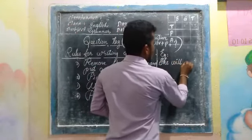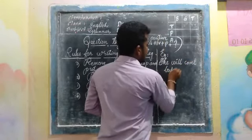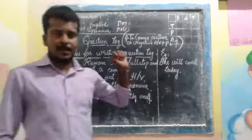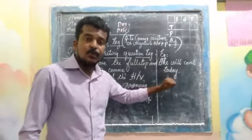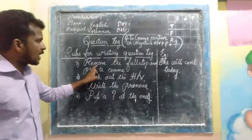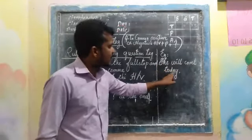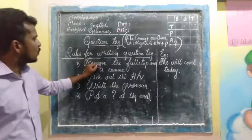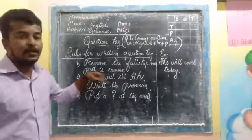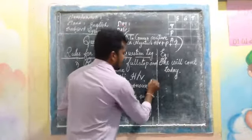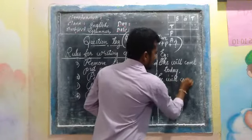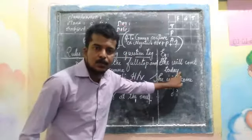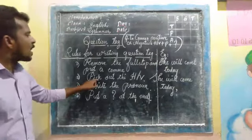Take the example sentence: 'She will come today.' This is the given statement, and we want to make the tag for it. As per rule one, this sentence ends with a full stop, so we must remove the full stop and put a comma. So we repeat the sentence as: 'She will come today,' — and the second rule is to pick out the helping word.